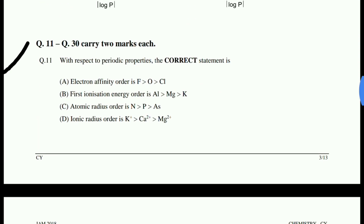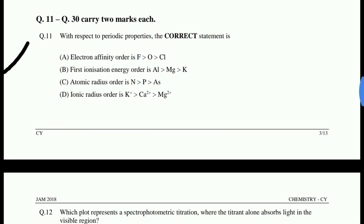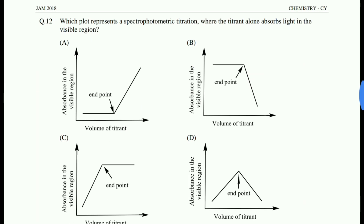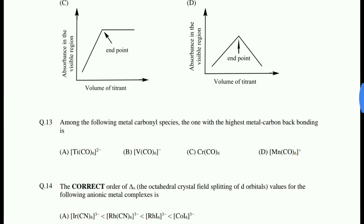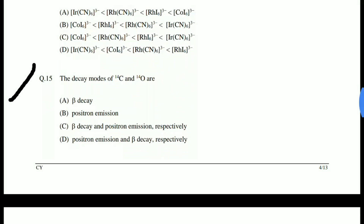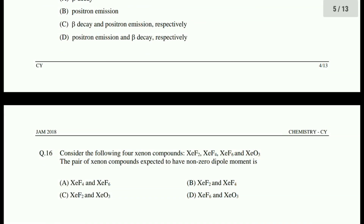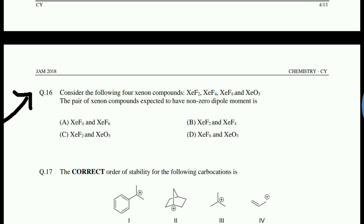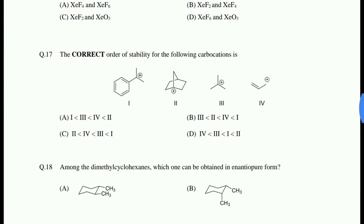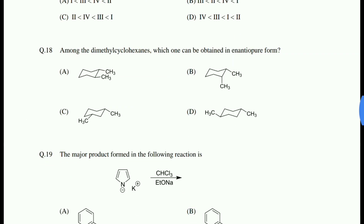Coming to question 11, the two-marks questions begin. Question 11 is from inorganic chemistry — periodic table. Question 12 is from physical chemistry — spectroscopy. Question 13 is from D-block elements, question 14 also D-block elements, and question 15 is nuclear chemistry — all three from inorganic chemistry. Question 16 is inorganic chemistry — P block elements. Question 17 is basic carbocation chemistry, that is organic chemistry. Question 18 is cyclohexene — organic chemistry.